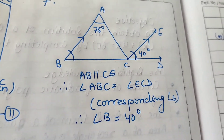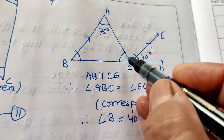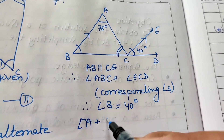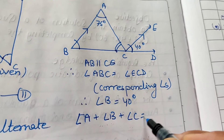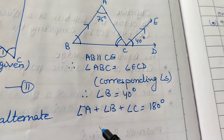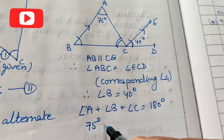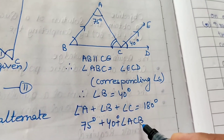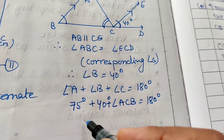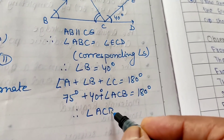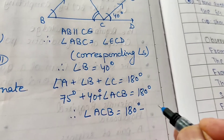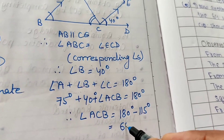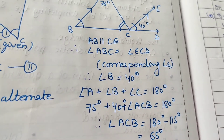Now we use the triangle angle sum property: angle A plus angle B plus angle C equals 180 degrees. So 75 plus 40 plus angle ACB equals 180. Therefore angle ACB equals 180 minus 115, which equals 65 degrees. Both remaining angles of triangle ABC are found: angle B equals 40 degrees and angle ACB equals 65 degrees.